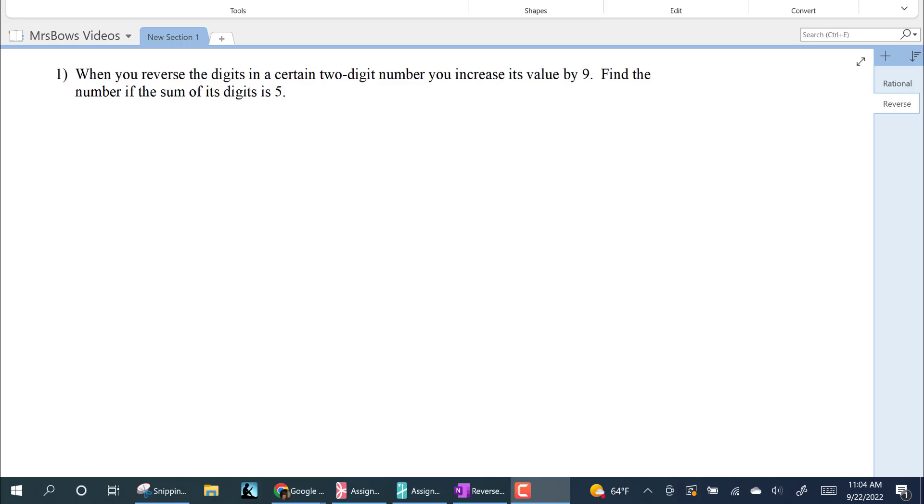So this would be the original number that you're trying to find. When the sum of the digits, so in the original number the sum of the digits is five.